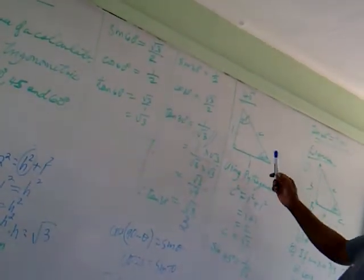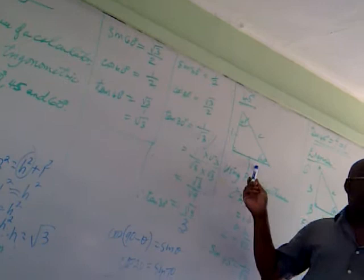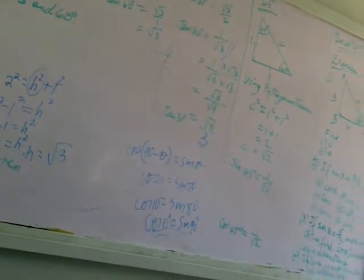So 90 plus 45 plus 45. Two sides are equal — this is an isosceles right triangle where two sides are equal.